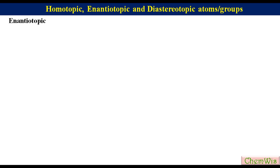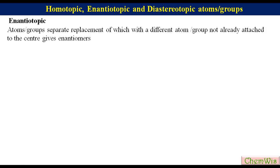Enantiotopic atoms or groups: Atoms or groups are said to be enantiotopic if their separate replacement with a different atom or group not already attached to the centre gives enantiomers. Enantiotopic atoms or groups cannot be differentiated by NMR.